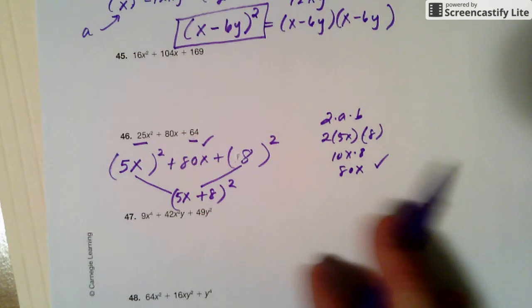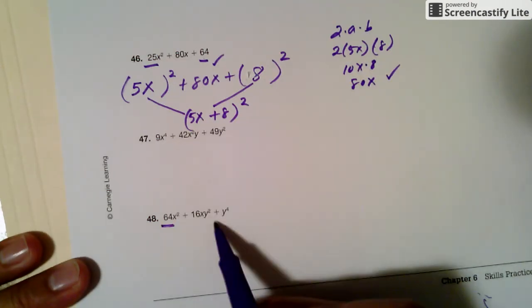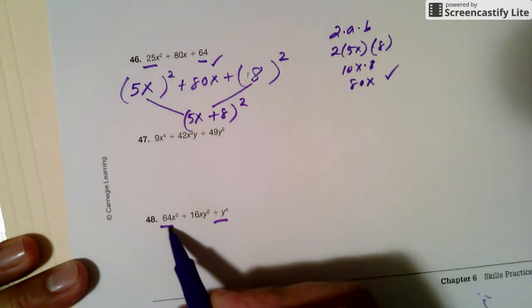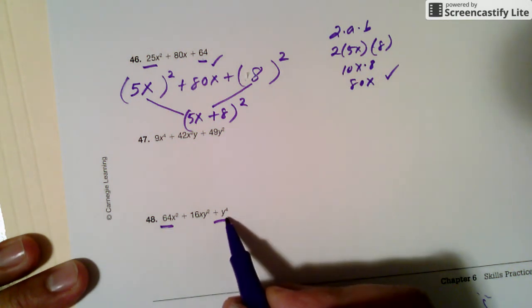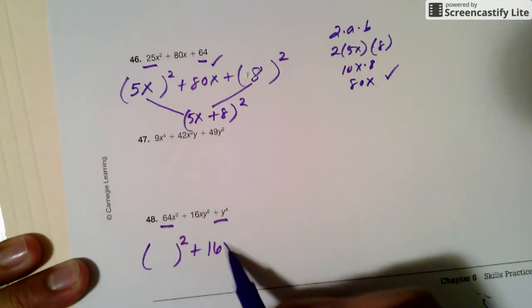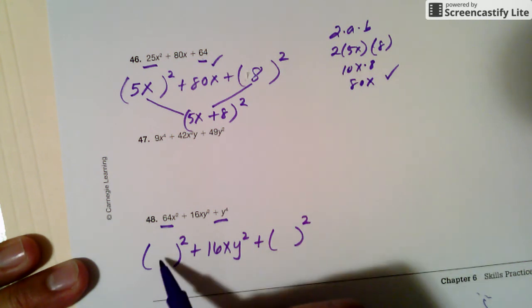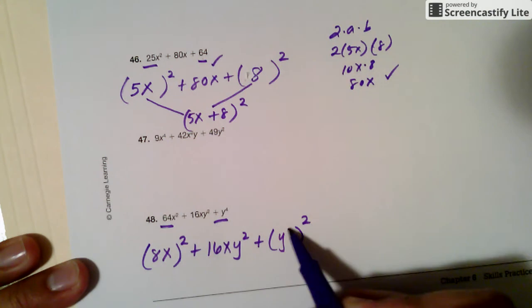Okay, so 48. I look at this, I look at that. Hey, 64 is a perfect square number, and I can probably write y to the 4th as something square. So something square plus 16xy square plus something square. So that's 8x, and this is y square square.